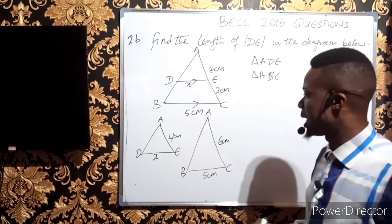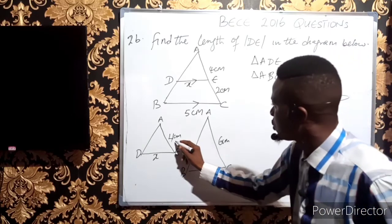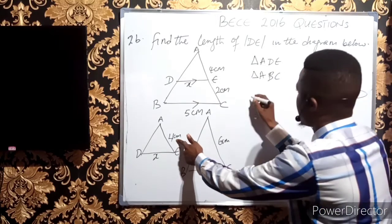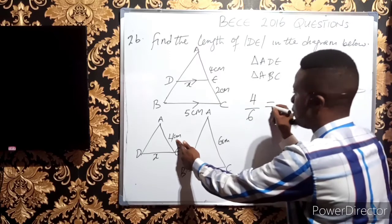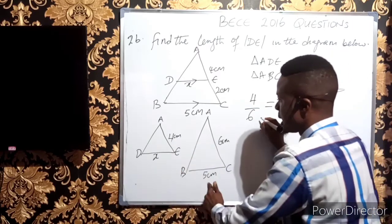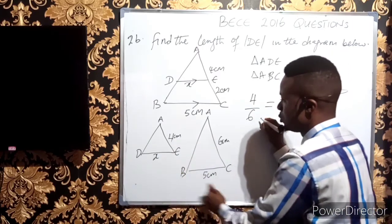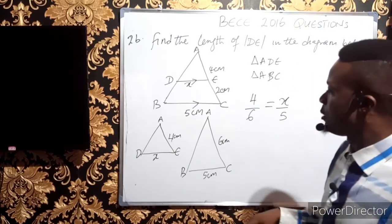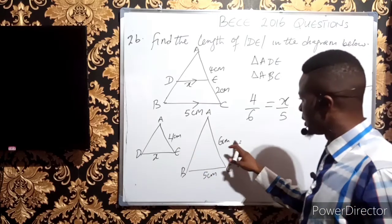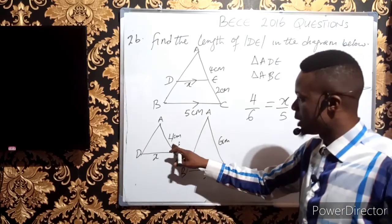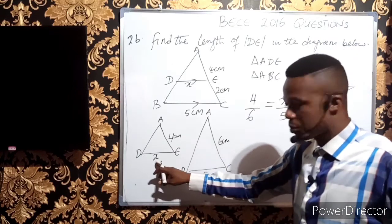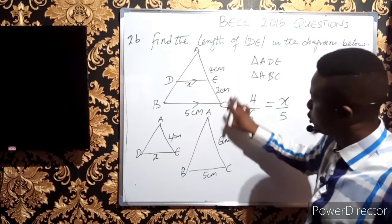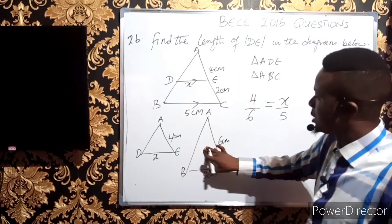Beginning with the small triangle, these sides are corresponding, so I can write 4/6 = x/5. Don't make the mistake of saying 4/6 = 5/x. I began with the smaller triangle, so I continue with the smaller side. Remember x is line DE that we want to find.